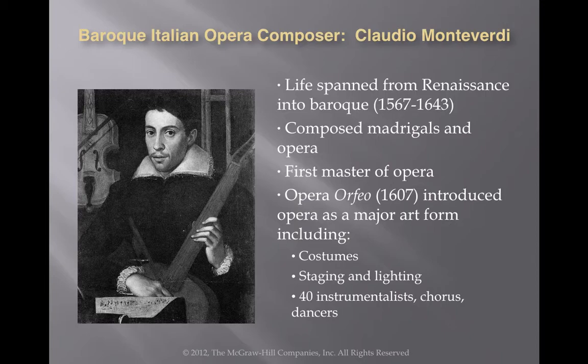The first master of opera was Claudio Monteverdi — a composer whose name you may recognize from previous chapters, as he was alive during both the Renaissance and Baroque periods and composed several madrigals we heard in the last chapter. His opera, Orfeo, in 1607, introduced opera as a major art form. It added costumes, staging and lighting, and a much bigger orchestra, making it the first major piece of work in the opera genre.